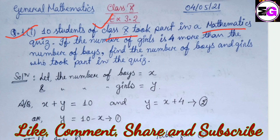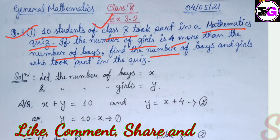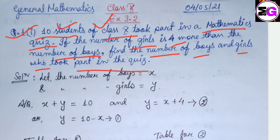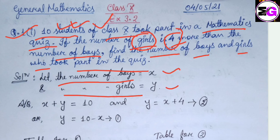Question number one: 10 students of class 10 took part in a mathematics quiz. If the number of girls is 4 more than the number of boys, find the number of boys and girls who took part in the quiz. The total number of students is 10 and the number of girls is 4 more than the number of boys. So I have taken: let the number of boys be x and number of girls be y.